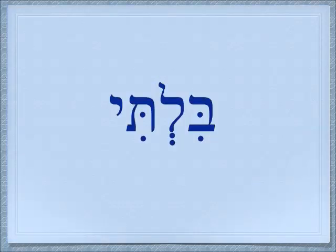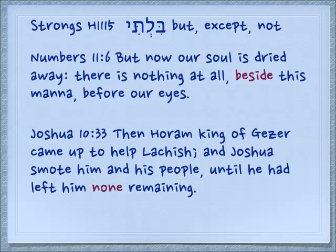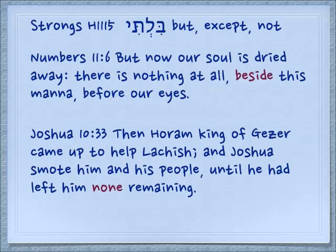Now all the bet-lamed words have to do with things being absent or non-existent. Here is another one, which is sometimes translated as 'not,' and that is bilti. Genesis 3.11: 'And he said, who told thee that thou was naked? Hast thou eaten of the tree whereof I commanded thee that thou shouldst not eat?' — you should go without eating from it. Exodus 8.22: 'And I will sever in that day the land of Goshen, in which my people dwell, that no swarms of flies shall be there.' Numbers 11.6: 'But now our soul is dried away. There is nothing at all besides this manna before our eyes.' Joshua 10.33: 'Then Horam, king of Gezer, came up to help Lachish. And Joshua smote him and his people until he had left him none remaining.'